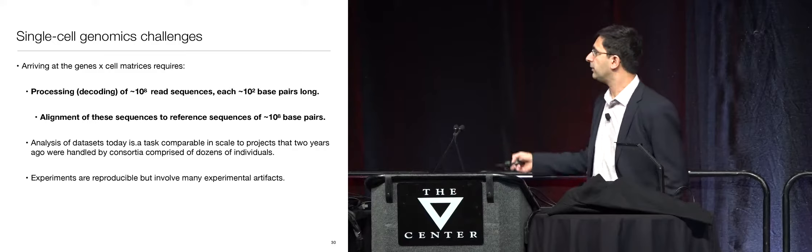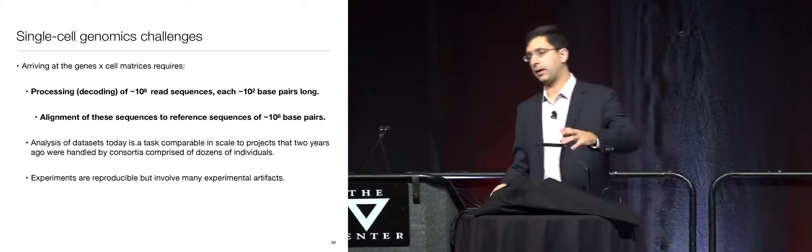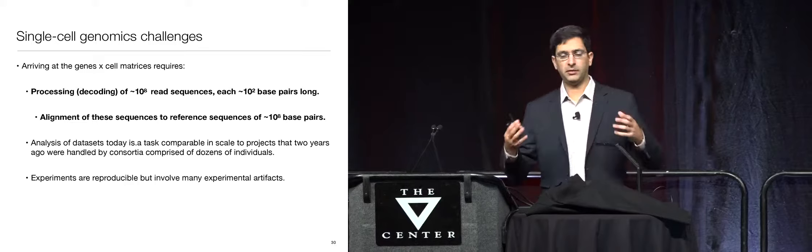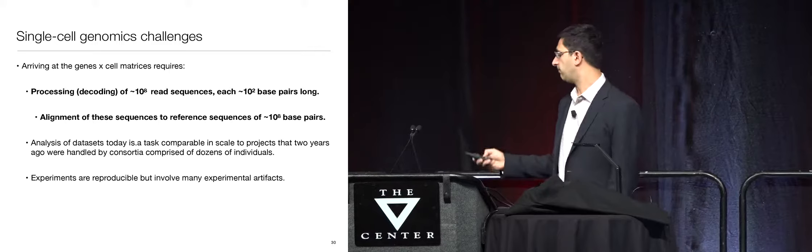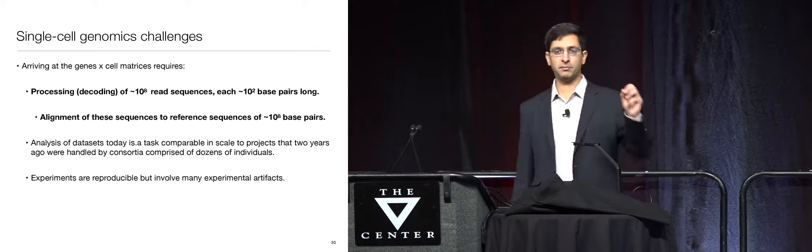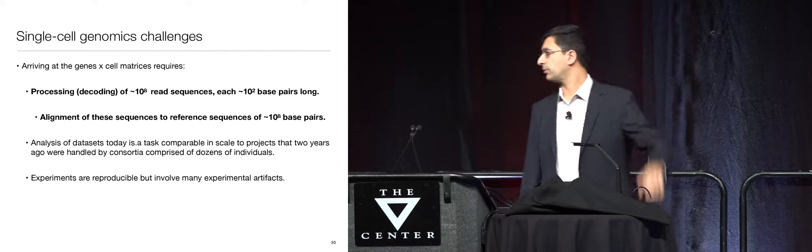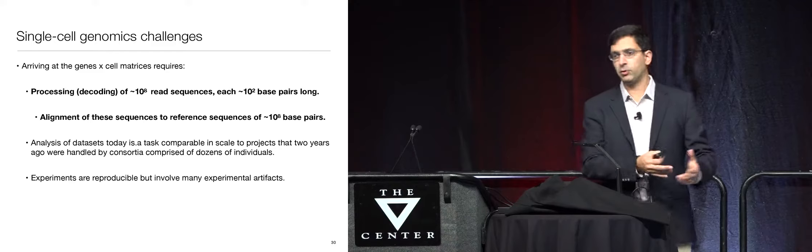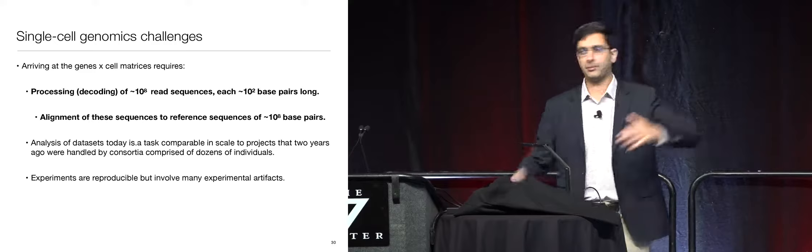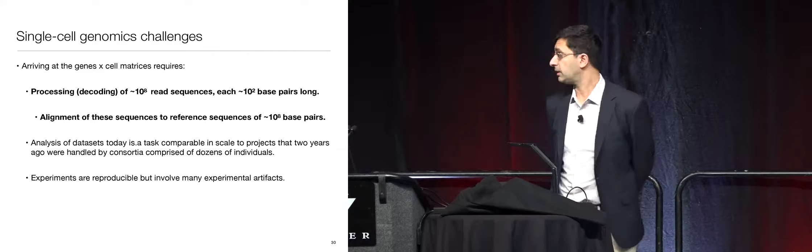One of the challenges in this area is that it involves biochemistry and biology but also computer science — the actual computations are very challenging. This is not working out on pencil and paper. A single experiment produces hundreds of millions of bases of DNA, all of which have to be converted into these matrices and distributions somehow. A single experiment today — like the one I'm about to show you — only a few years ago would have constituted a consortium project with mathematicians, statisticians, and computer scientists, all brought together by some big grant from the NSF or the NIH.